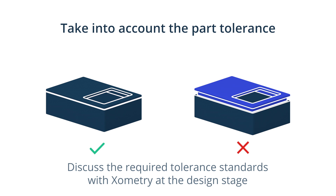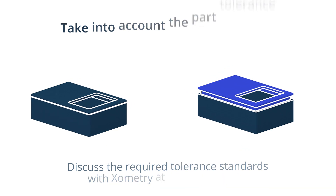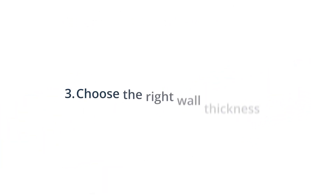For example, DIN 16901 contains a general tolerance table as a reference for different materials. If your supplier uses this standard and you need tighter tolerances or other standards, they will ask you to provide 2D drawings.